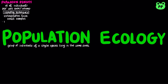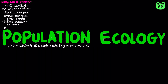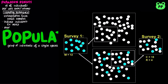Another sampling technique involves indicators of population size, such as the number of nests, burrows, or tracks. The third sampling technique is mark and recapture. In this method, in order to estimate the population, a portion of the population is captured, marked, and released.